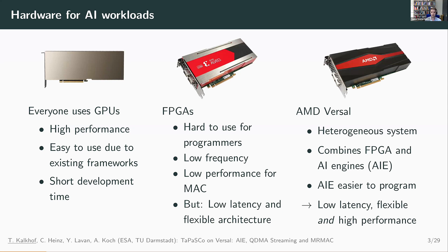Now we have the new AMD Versal generation, which has a heterogeneous system already on the card. They combine the FPGA with AI engines, which are software programmable, so they are easier to program than an FPGA. AMD promises to combine low latency and the flexibility of FPGAs with higher compute performance.